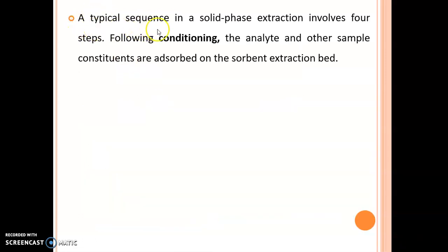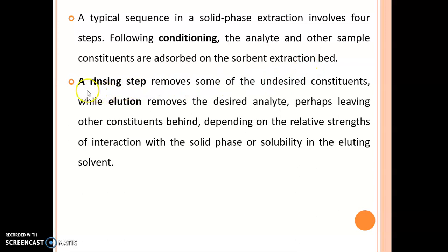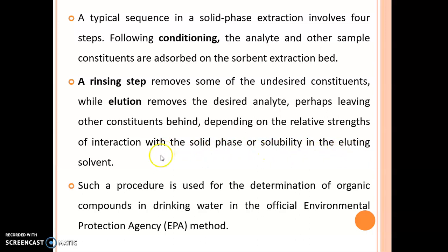A typical sequence in solid phase extraction involves four steps following conditioning: the analyte and other sample constituents are adsorbed on the sorbent extraction bed. The rinsing step removes some of the undesired constituents, while elution removes the desired analyte, perhaps leaving other constituents behind, depending on the relative strength of interaction with the solid phase or solubility in the eluting solvent. Such a procedure is used for the determination of organic compounds in drinking water in the official EPA method.